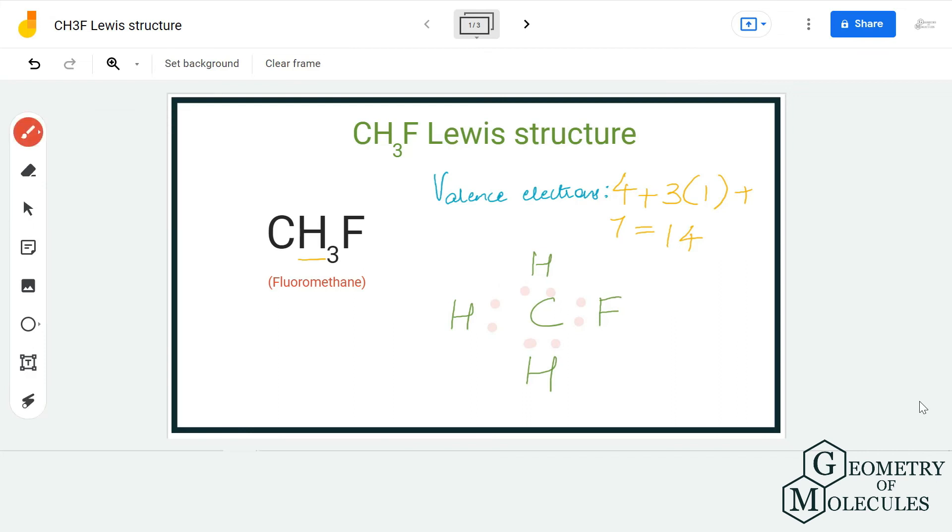Doing that, we will come across this Lewis structure in which carbon forms four single bonds and all these atoms in the structure have complete octets. Hence, this is the Lewis structure of CH3F.